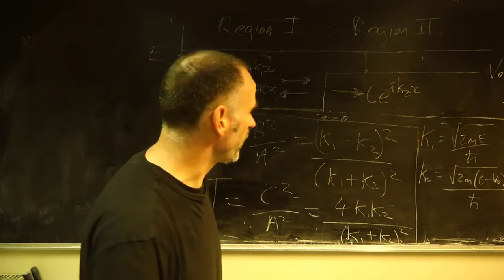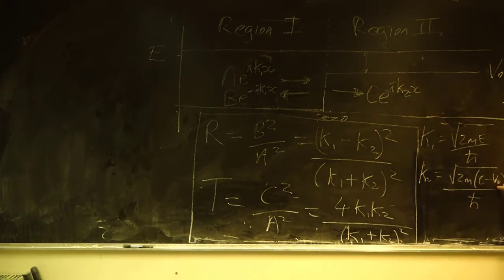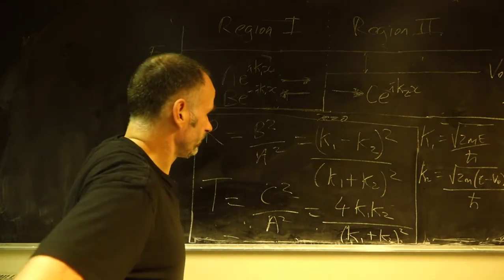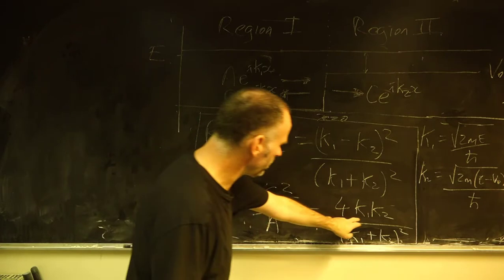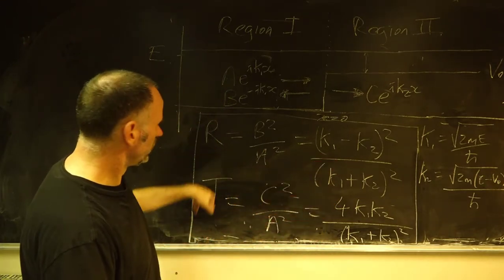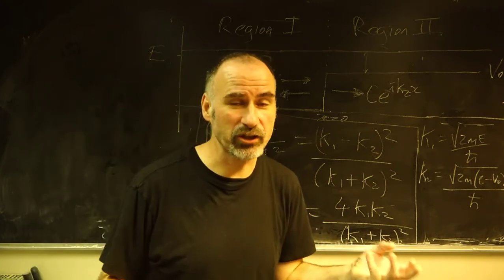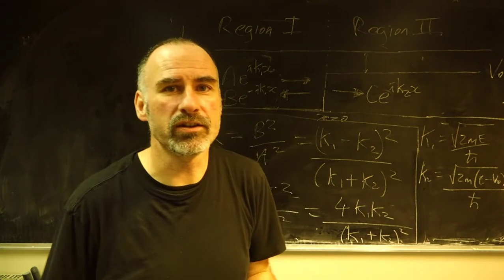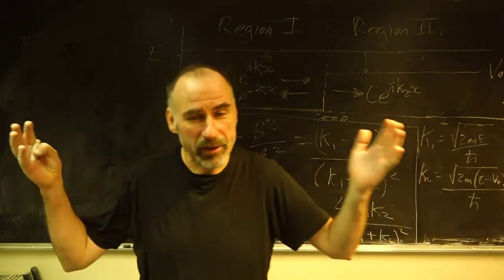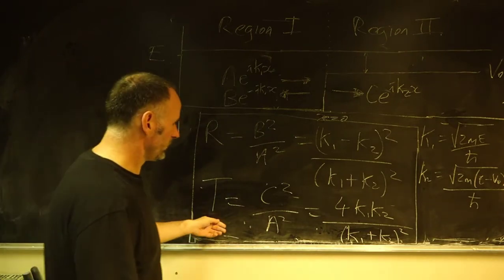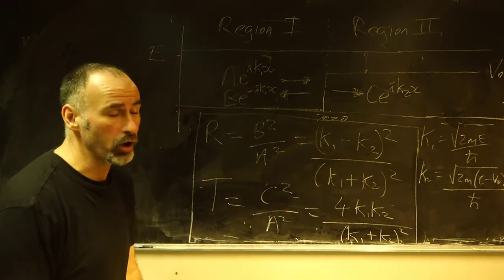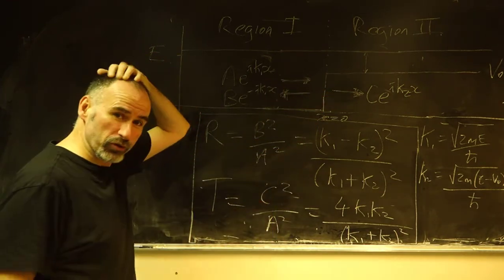Another perhaps surprising thing: if E equals V0, so if the energy of the particles equals the step height, then k₂ becomes zero. That means our transmission coefficient becomes zero, and therefore our reflection coefficient R = 1. T + R must add up to 1 — that's another expression of conservation of particles. No particles are created or destroyed, so the total flux is conserved. When E = V0, absolutely everything is reflected. You can verify: plugging k₂ = 0 gives k₁²/k₁² = 1.